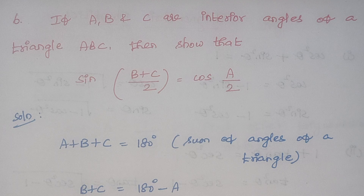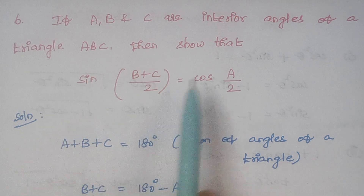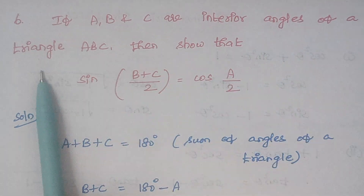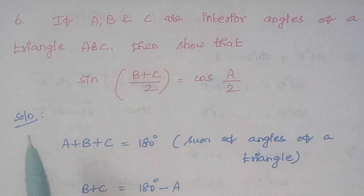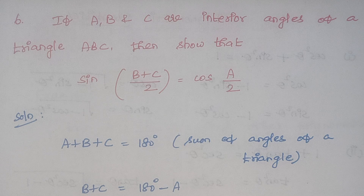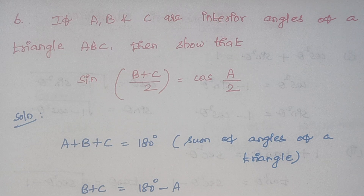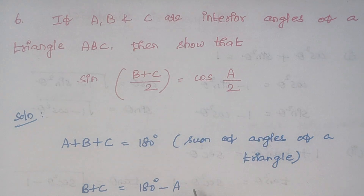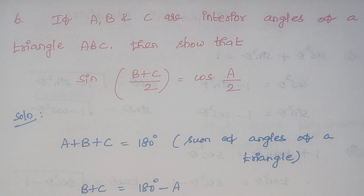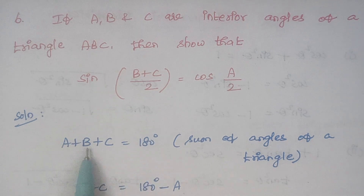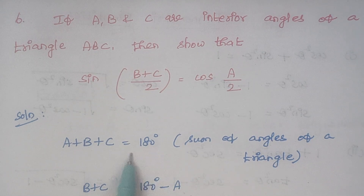Our sixth problem: if A, B and C are interior angles of a triangle ABC, then show the given condition. A, B and C are interior angles of a triangle and we have to prove the expression. The general rule is that the sum of angles of a triangle is 180 degrees, so A plus B plus C equals 180 degrees.